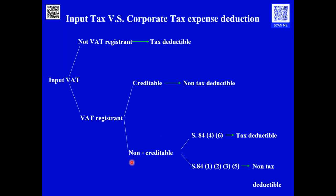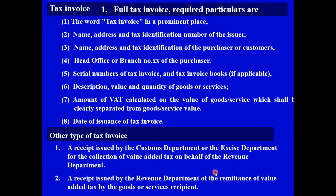For the non-creditable VAT, it will be tax deductible if it is generated from entertainment or from a passenger car. However, under bracket number 6, there are other cases. We will talk about this again for the case of non-deductible in the corporate tax calculation. For VAT which is not creditable, there are many cases — for example, the tax invoice should be complete.